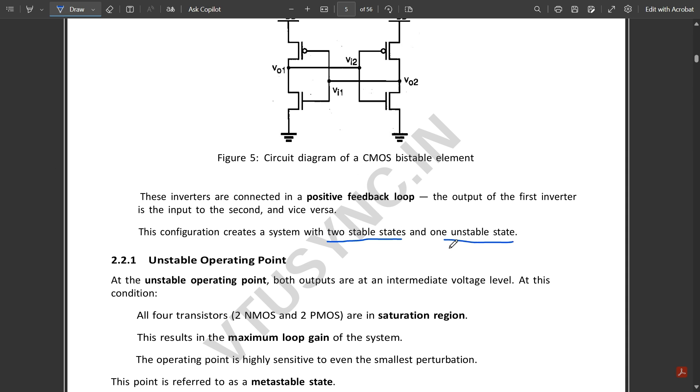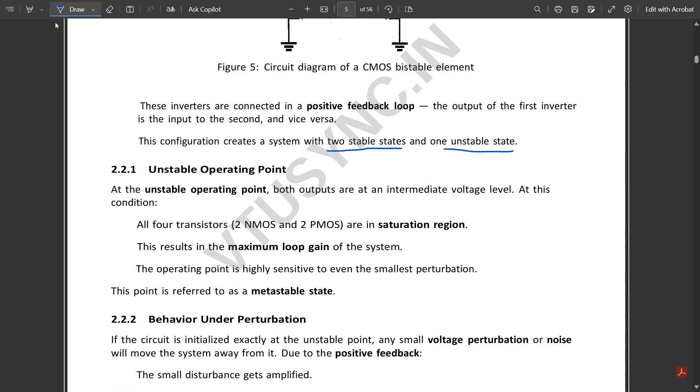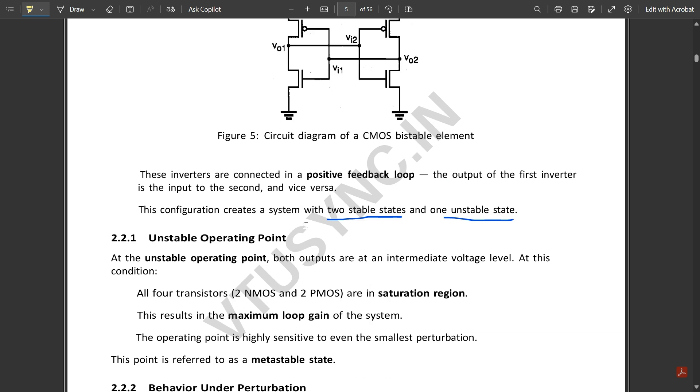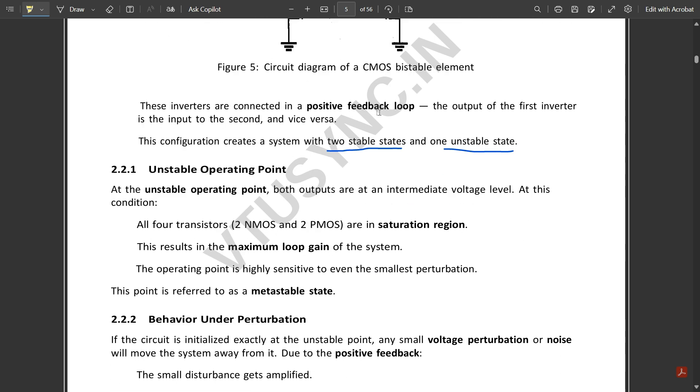At the unstable operating point, both outputs are at an intermediate voltage level. At this condition, all four transistors, two NMOS and two PMOS, are in the saturation region.